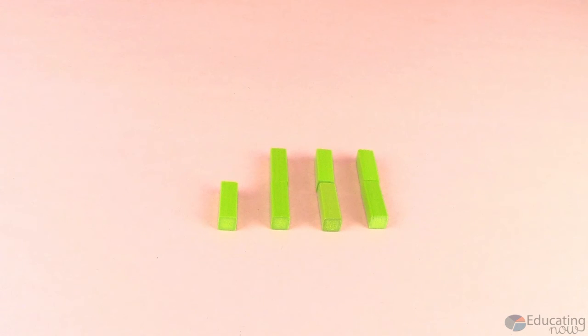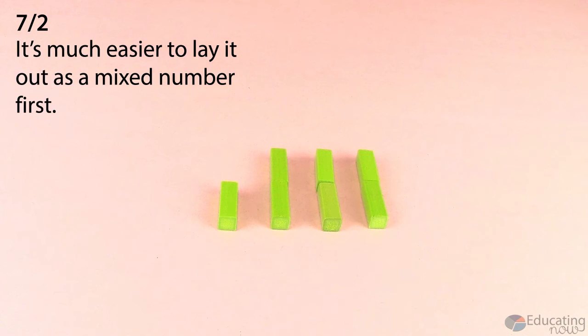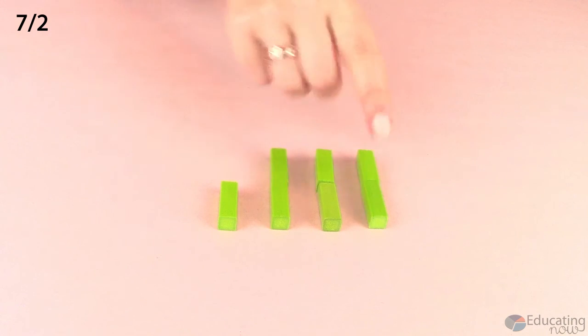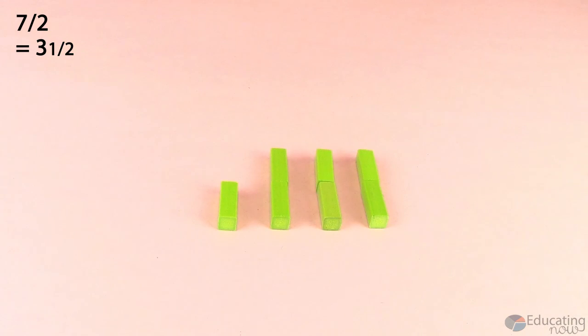So next, I would ask my students to show me seven halves. And again, if they make it in one big long train, that's fine. But I find it much easier to turn it into a mixed number when I line up my blocks this way. So seven halves looks like this and is equal to three wholes and a half.